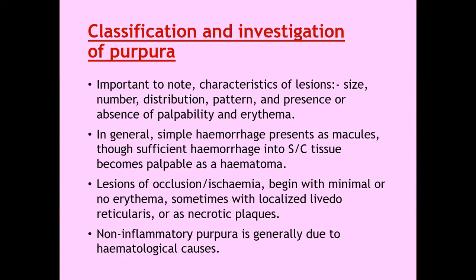Classification and investigation of purpura. It is important to note the characteristics of the lesion: whether it is purpuric or not, whether it is petechiae or ecchymosis, size, number, distribution (face, limbs, or trunk), pattern (scattered or reticulate), and presence or absence of palpability and erythema. Simple hemorrhage presents as a macule, though sufficient hemorrhage into subcutaneous tissue becomes palpable as a hematoma. Lesions of occlusion or ischemia begin with minimal or no erythema, sometimes with localized livedo reticularis or as necrotic plaques.